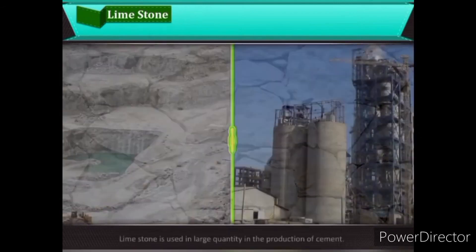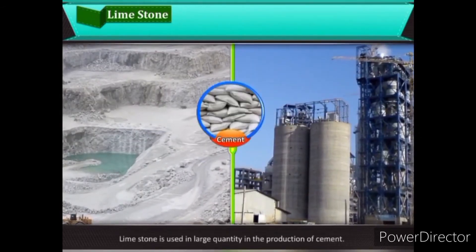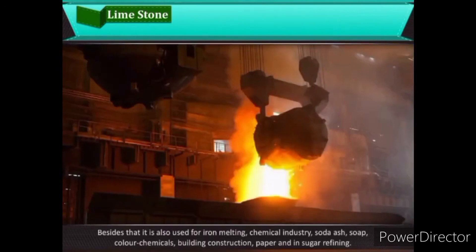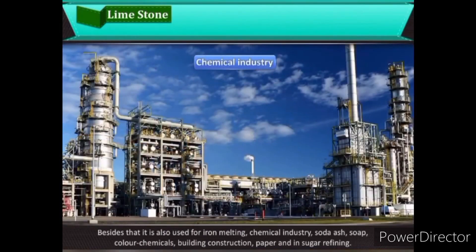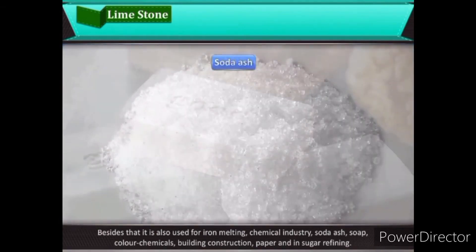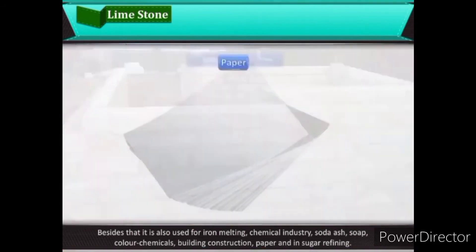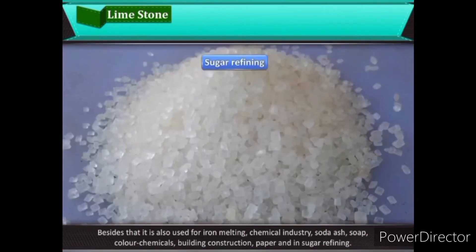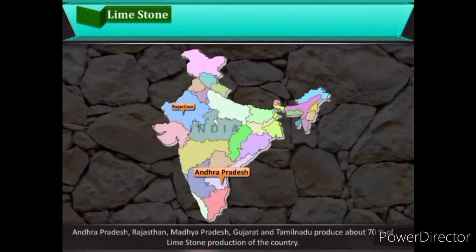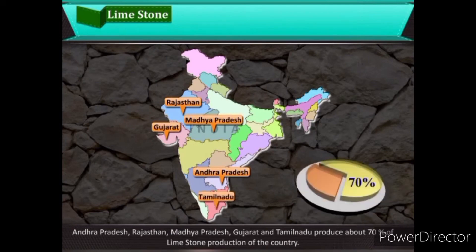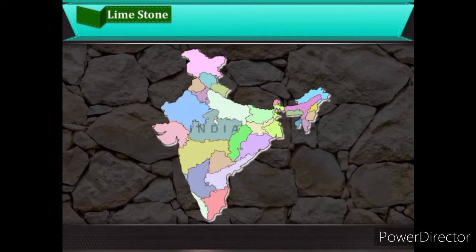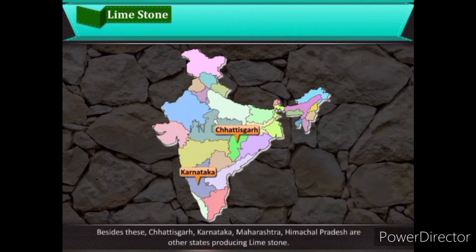Limestone is used in large quantities in the production of cement. It is also used for iron melting, the chemical industry, soda ash, soap, colour chemicals, building construction, paper, and sugar refining. Andhra Pradesh, Rajasthan, Madhya Pradesh, Gujarat, and Tamil Nadu produce 70% of the country's limestone. Other limestone-producing states include Chhattisgarh, Karnataka, Maharashtra, and Himachal Pradesh.